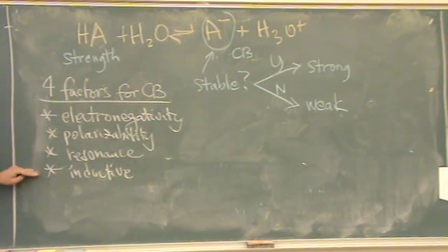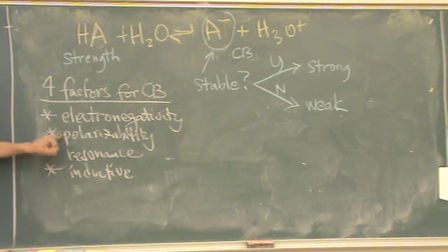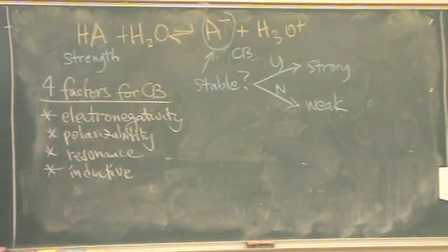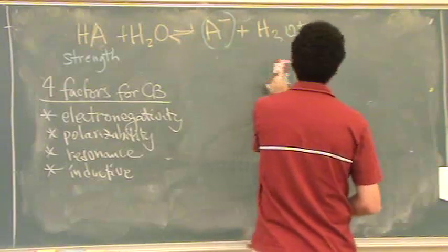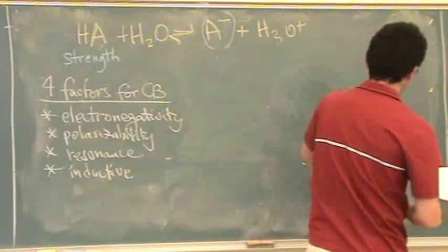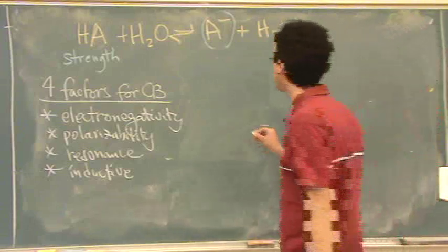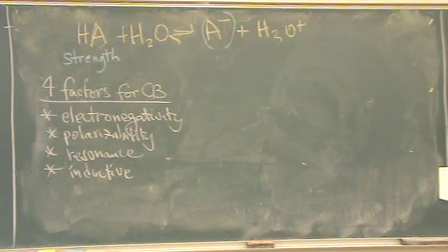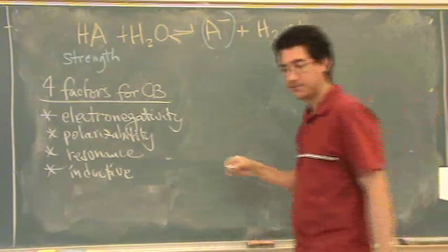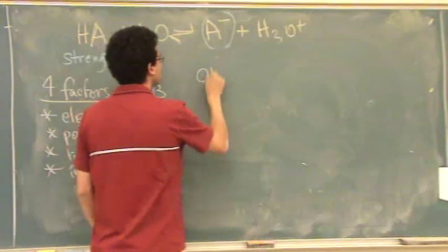I'll basically say, if it has any of these four, the more of it it has, the more stable it is. If there is resonance, it's going to be stable. If there is polarizability, it's going to be stable, etc. Let me give you a basic example going case by case. I'm going to draw part of the periodic table. If you have your periodic table, I'm going to start with carbon, go to the right, and down. So we have CH4.